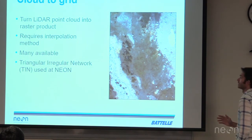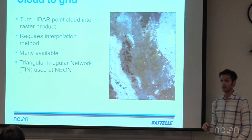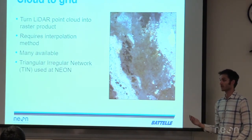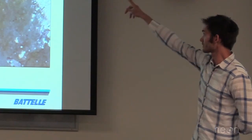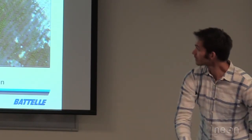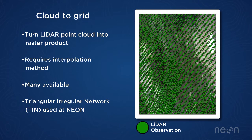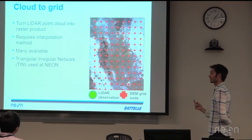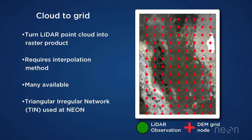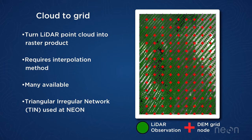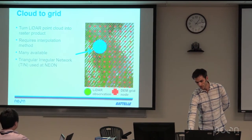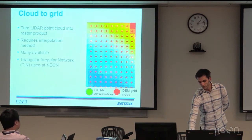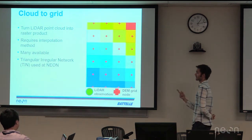That's just our L1 product. All the L3 products we produce are rasters as opposed to point clouds — a grid of points rather than individual coordinates. To convert those points into a raster product, you imagine observing an area with LiDAR and getting a sampling of LiDAR points, then needing the elevation at each grid node. At NEON we create these rasters at one meter resolution.